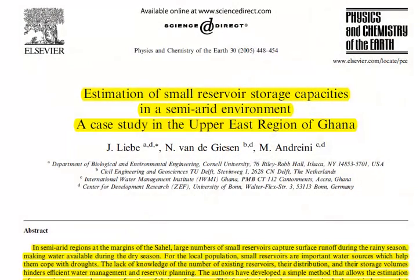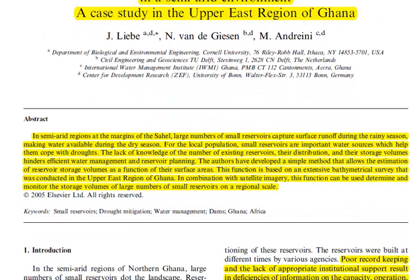This paper is about estimation of small reservoir storage capacities in a semi-arid environment, a case study in the Upper East region of Ghana, published in Physics and Chemistry of the Earth in 2005. It is an interesting topic for water resource management, especially in drier parts of the world where you find literally thousands of small reservoirs — almost in all savannah-type environments in Africa, but also in Asia and Latin America. A method is presented to make an inventory mainly based on remote sensing data.